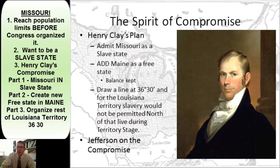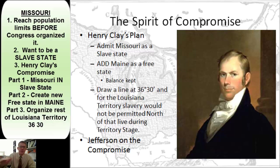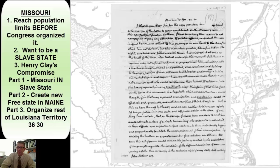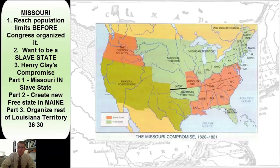Then Henry Clay said we need to organize this territory. So let's draw a line at the southern border of Missouri and say that for the rest of the Louisiana Territory, slavery would not be permitted north of that line, but would be permitted south of it. When Thomas Jefferson first heard about this compromise, he said this is a sign of the end of the Union — and I'll show you that letter in class tomorrow. Here's what the United States looks like after the Missouri Compromise: Missouri comes in as a slave state, Maine is created as a free state, and they draw this line on the map.